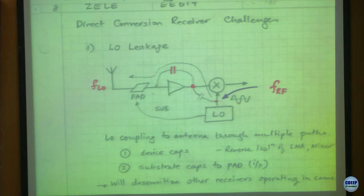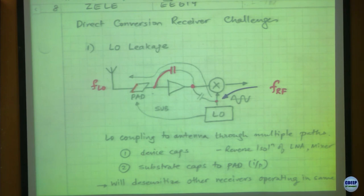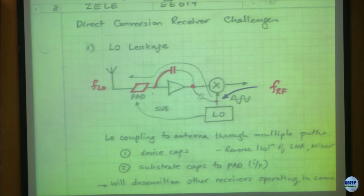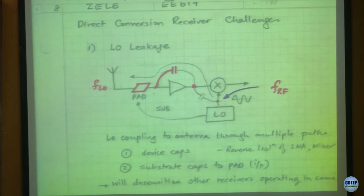You will also have coupling which will bring it back to the input of the LNA. This LO is somewhere on the chip, thumping a large signal on the substrate and the RF pad, which is where the wire bond is connecting from outside. That pad acts as a huge capacitor plate, under which there is a substrate. If the substrate is thumping with a large LO signal, it is going to couple back into that pad capacitance. All these things will eventually be transmitted out of the antenna.